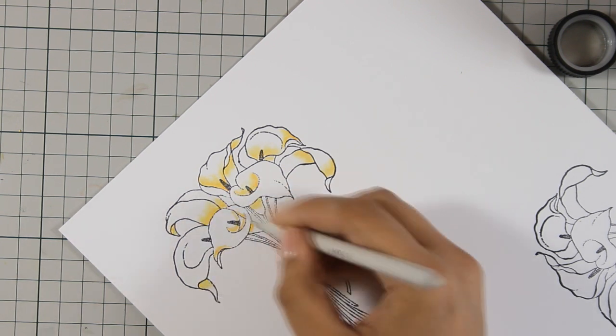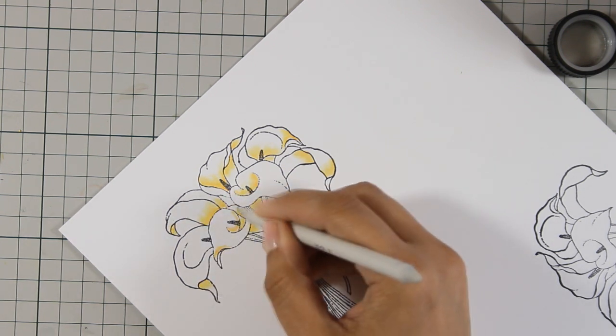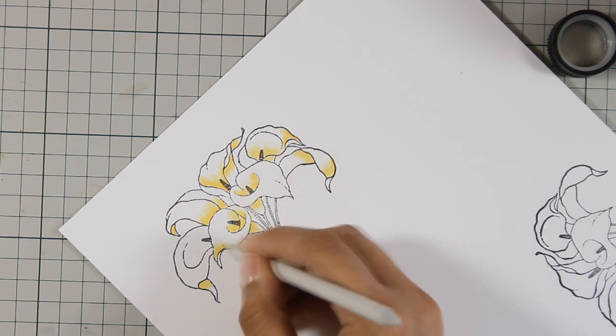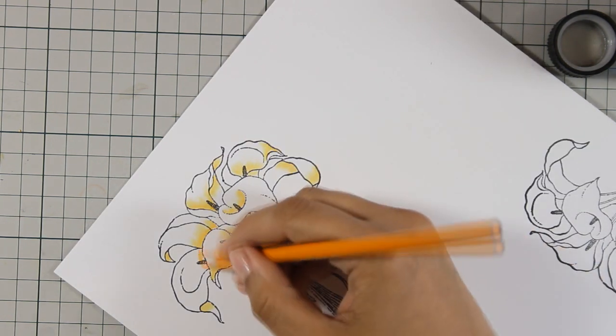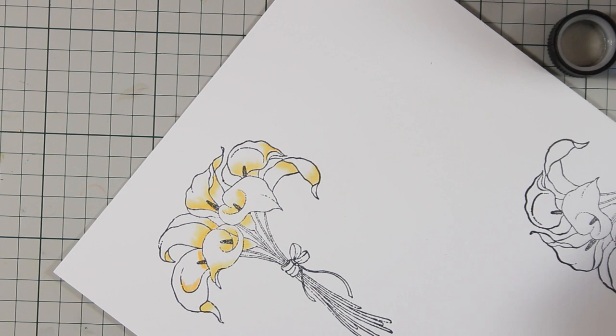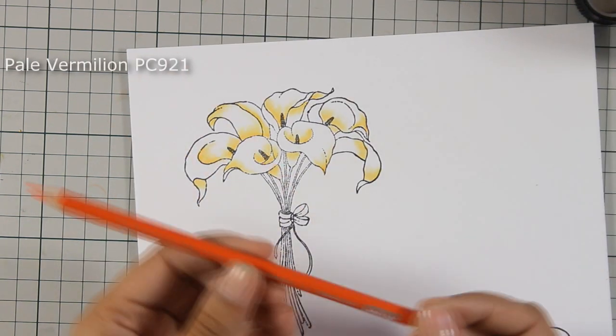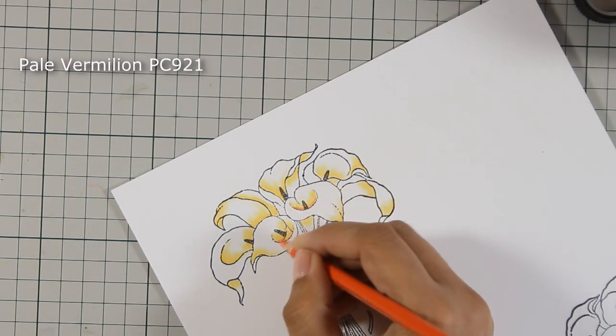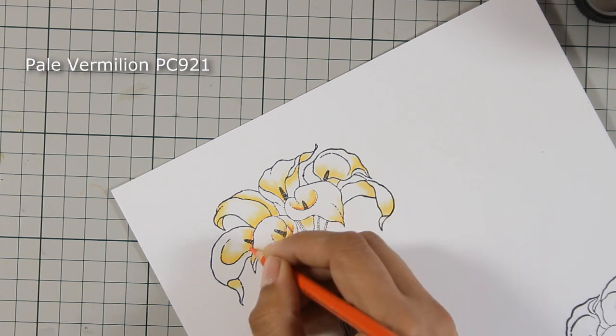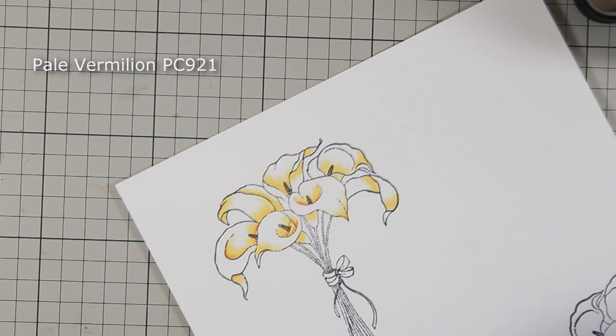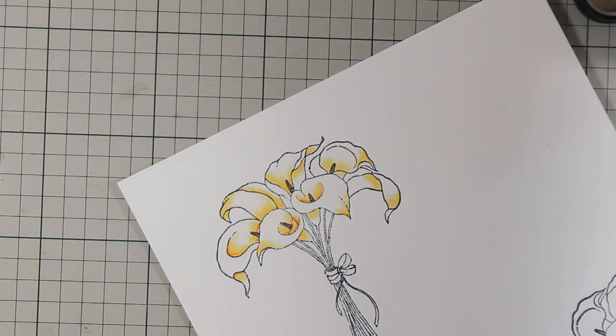So I am dipping my stamp tool in the Gamsol and I am just spreading the color. Once I was happy with the orange shadow, I went ahead and added just a touch of light red to deepen the shadows.